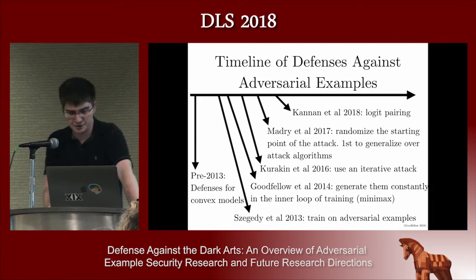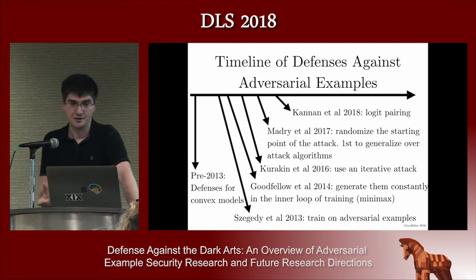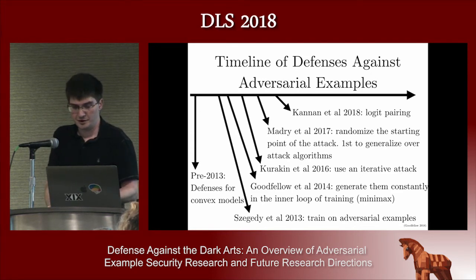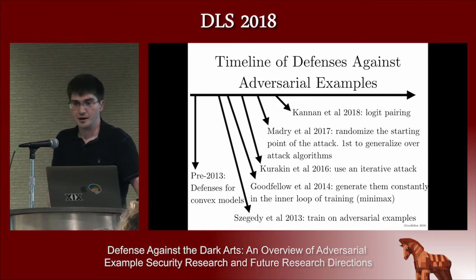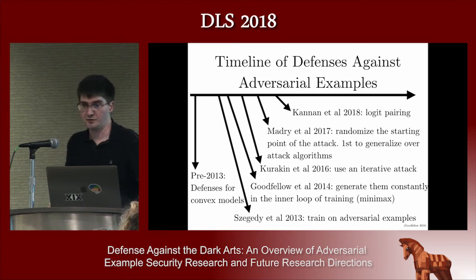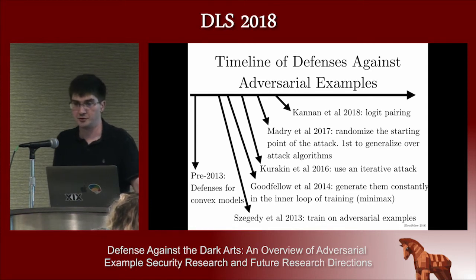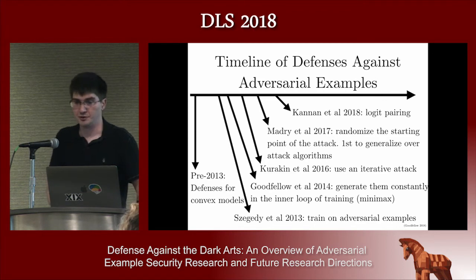To explain where adversarial logit pairing came from: the first defenses described for machine learning models were mostly for convex models. From when I started working on this as a neural net person, in 2013 we had the idea of training on adversarial examples but just generated a bunch once and added them to the training set — that didn't work very well. In 2014 I figured out a cheaper way to generate them constantly in the inner loop, beating the specific attack we trained on but not others. In 2016 we tried training on stronger attacks without much success. In 2017, Alex Madry's lab upgraded the attack strength to the point that adversarial training generalized over multiple attacks. This year, with logit pairing, we've increased robustness beyond what was previously possible, still within the same threat model.